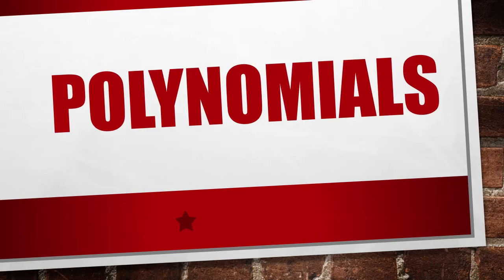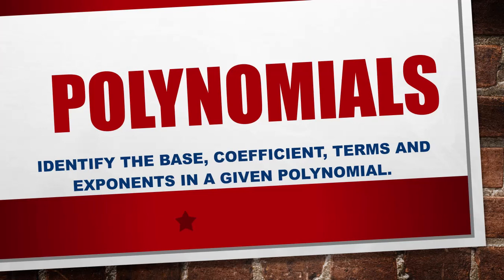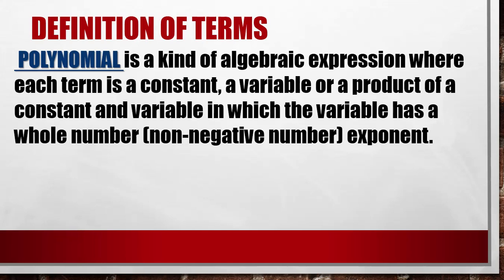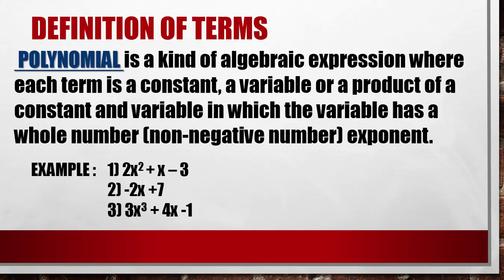Okay, so this is our lesson for today about polynomials. In this lesson we're going to identify the base, coefficient, terms, and exponents in a given polynomial. A polynomial is a kind of algebraic expression where each term is a constant, a variable, or a product of a constant and variable, in which the variable has a whole number exponent which is non-negative. So there are no negative exponents. Examples: 2x² + x − 3, negative 2x + 7, and 3x³ + 4x − 1. These are what we call polynomials.